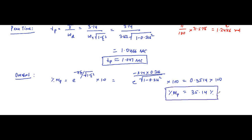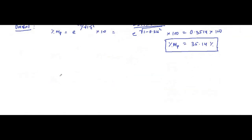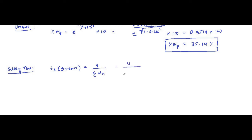Settling time is calculated for both 2% and 5% error criteria. For the 2% error criterion, settling time ts = 4 / (ζωn) = 4 / (0.316 × 3.162), which comes out to approximately 4 seconds.